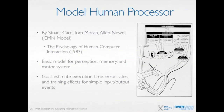And therefore it's important to understand how this thing works. One of the first models trying to explain the basic principles there is the CMN model, which comes from the names of the authors: Stuart Card, Tom Moran, and Alan Newell. And it's quite old — it was released in the early 80s.